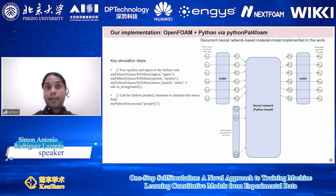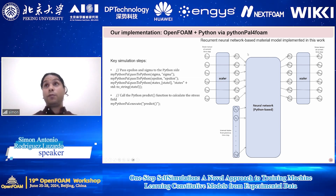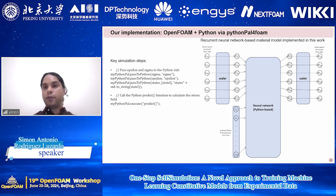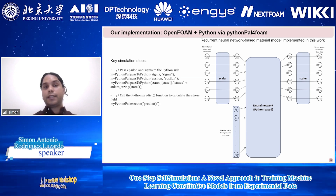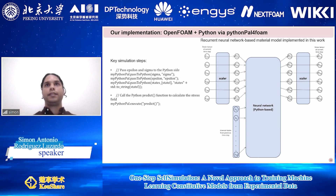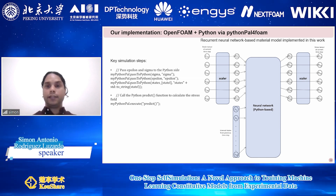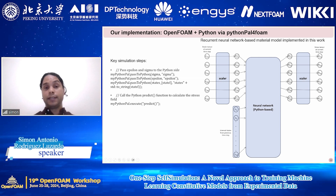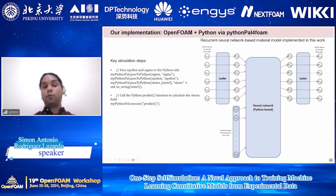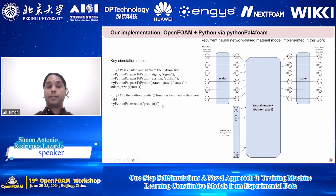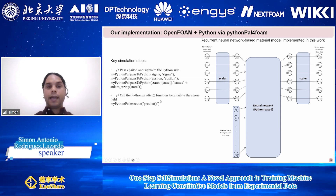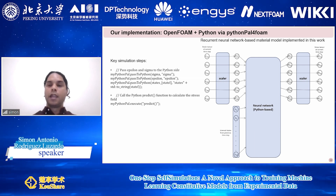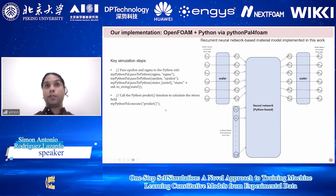We already tested this method on an elastoplastic deformation case. The machine learning model used is a recurrent neural network with two hidden layers — one GRU layer and one fully connected layer. It takes the strain tensor at the current time step as input and produces the stress tensor at the current time step as output, with state variables held internally. Within the OpenFOAM simulation, the strain field, stress field, and states are passed to Python, and the predict function is triggered, which fits the neural network with the strains and computes the stress.